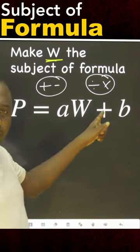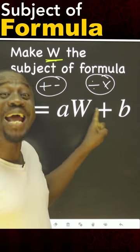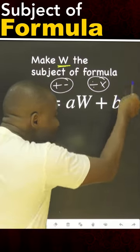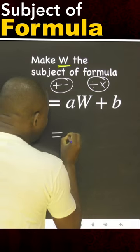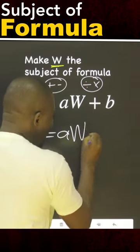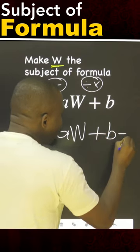What is this? Plus. We need minus to move it to the other side. How? So we say, minus B, that is P minus B equals to A W, B minus B.